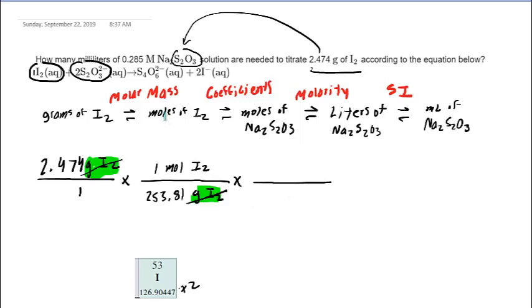Let's keep in mind that if you have moles of I2 in your numerator, then in the next conversion factor, you're going to put moles of I2 in the denominator, similar to how we did that before. So we'll put moles of I2 here, and then we'll put moles of our target substance here.